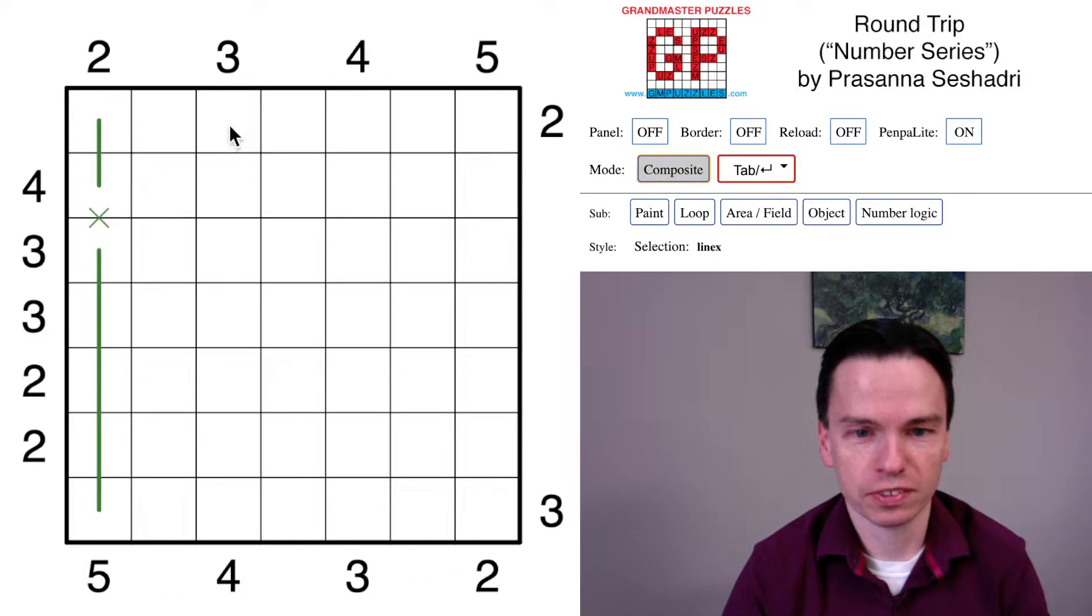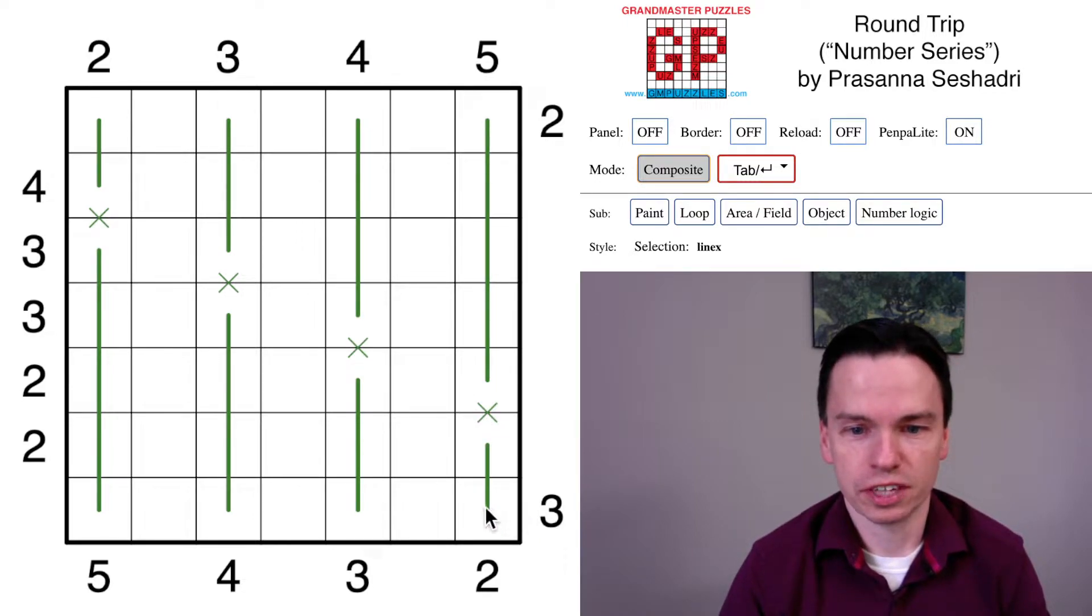the quick start of the puzzle is actually just marking 2 with 5, 3 with 4, 4 with 3, and 5 with 2. Now looking at the horizontal clues, this 3 has to turn immediately in and finishes off.